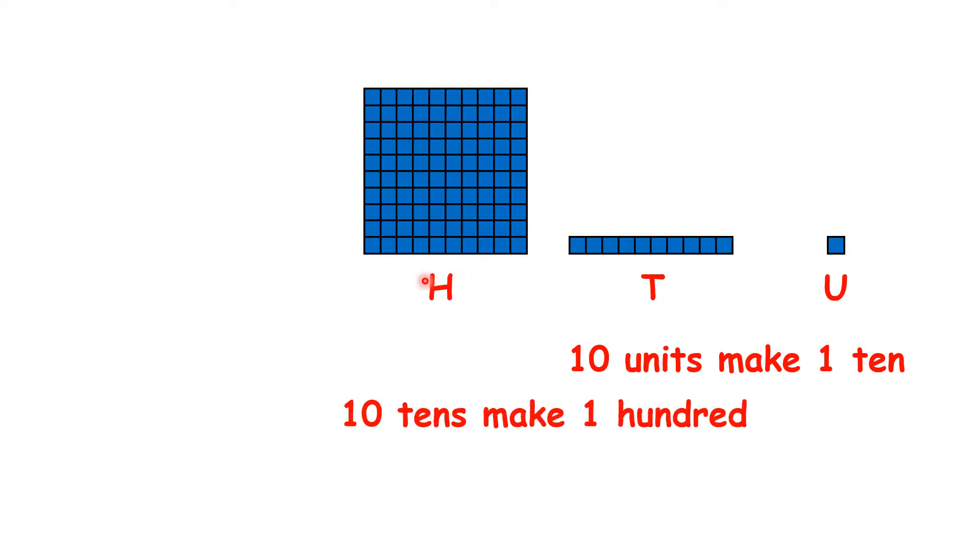So we know that units are just ones, but when you have ten units together, you make one ten, so to show that we can draw a line of ten squares. When you have ten tens, you have a hundred, so we can show a hundred with a square made up of ten of these ten lines.